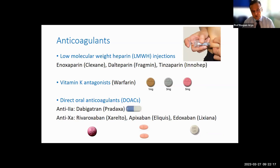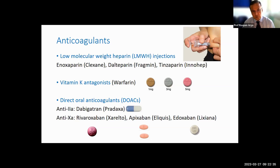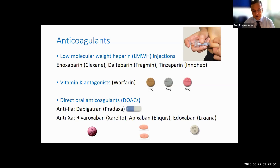There are three main groups of anticoagulants in common use. First, low-molecular-weight heparin injections, which are given subcutaneously. These are used mainly for preventing blood clots in hospitals, but can also be used for the initial treatment of venous thromboembolism. Next are the vitamin K antagonists, which have been around for nearly three-quarters of a century and work by reducing the production of vitamin K-dependent clotting factors in the liver.